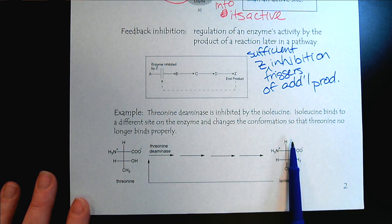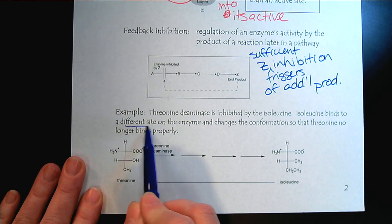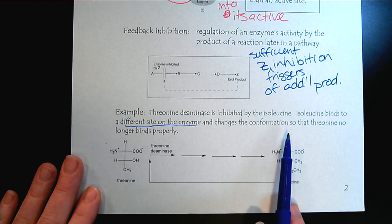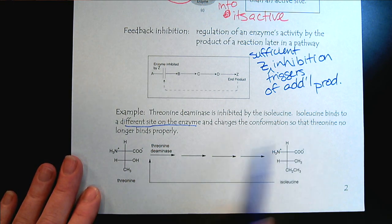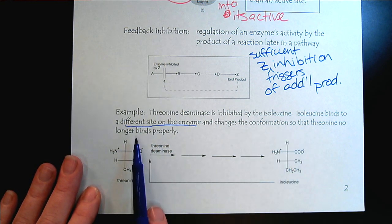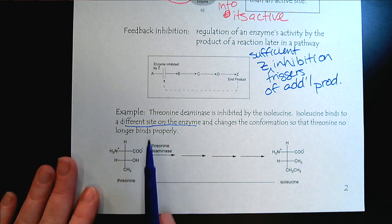However, isoleucine bonds to a different site on the enzyme and changes the conformation so that threonine no longer binds properly.